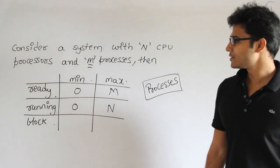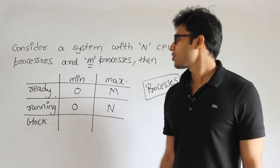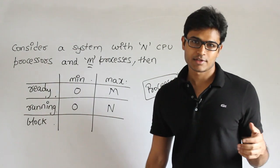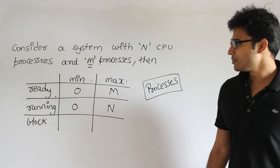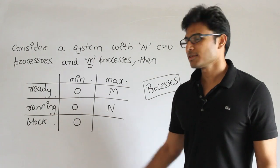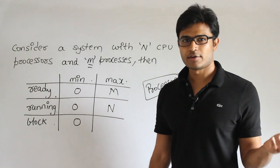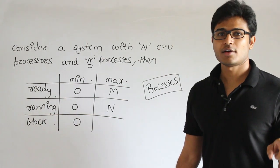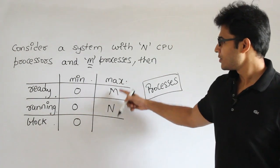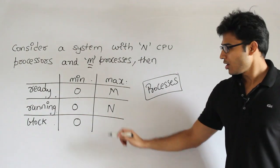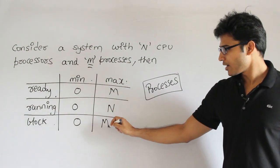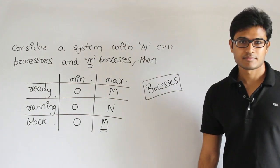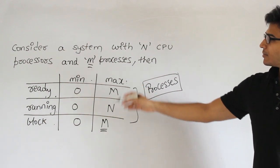For blocked state: minimum is zero, which means no process might need any I/O. If everything is CPU-bound, then all processes will be either in running or ready state. Maximum is m - all processes might need I/O, so all of them can be in blocked state at the same time. This is the complete answer.